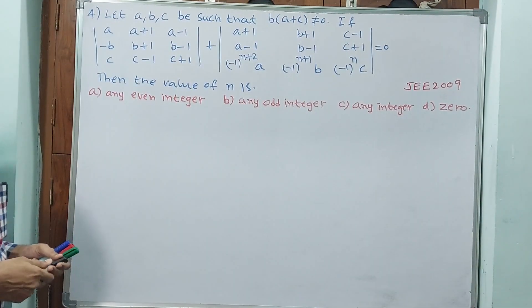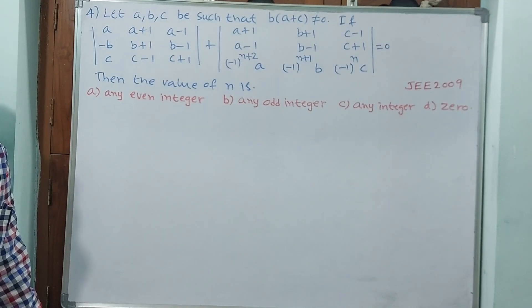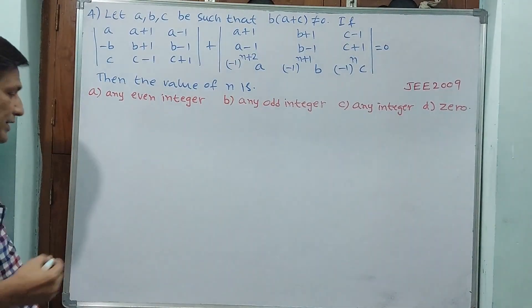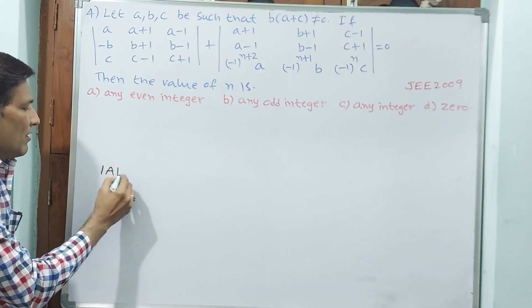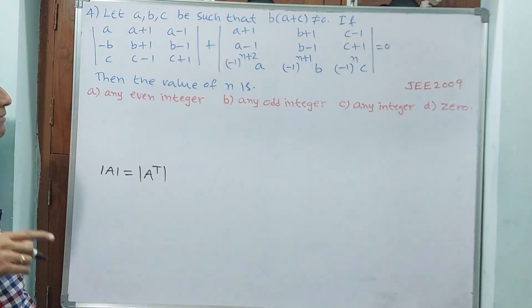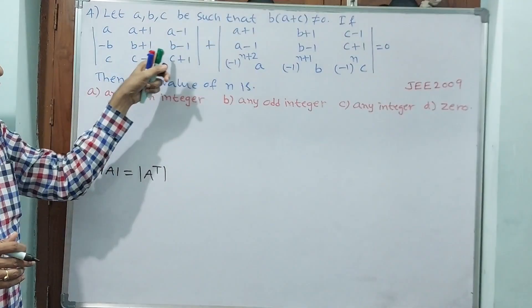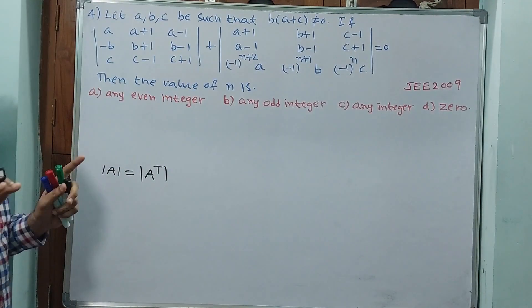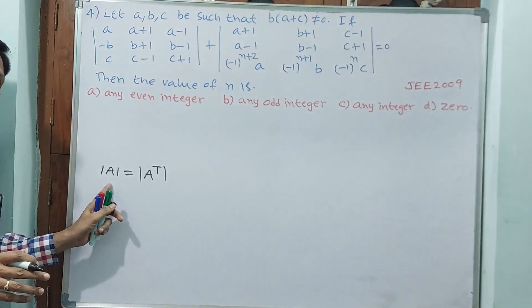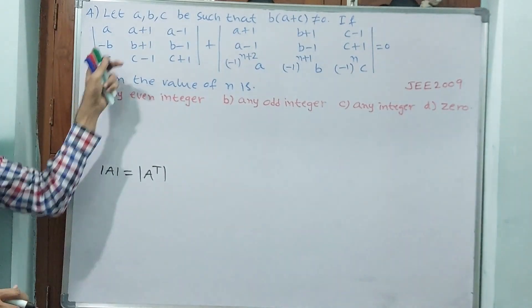Let us see how it will come. Before proceeding, have a look at these two determinants — is there any similarity in any row or column? That is very essential, then only something can be done. One property you should know: the determinant of A is equal to the determinant of A transpose, because the determinant can be found by row or by column — even if you interchange elements the determinant remains equal.